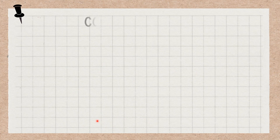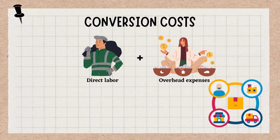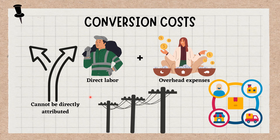Conversion costs include direct labor and overhead expenses incurred as a result of the transformation of raw materials into finished products. Overhead costs are defined as the expenses that cannot be directly attributed to the production process but are necessary for operations, such as electricity or other utilities required to keep a manufacturing plant functioning throughout the day. Direct labor costs are the same as those used in prime cost calculations.